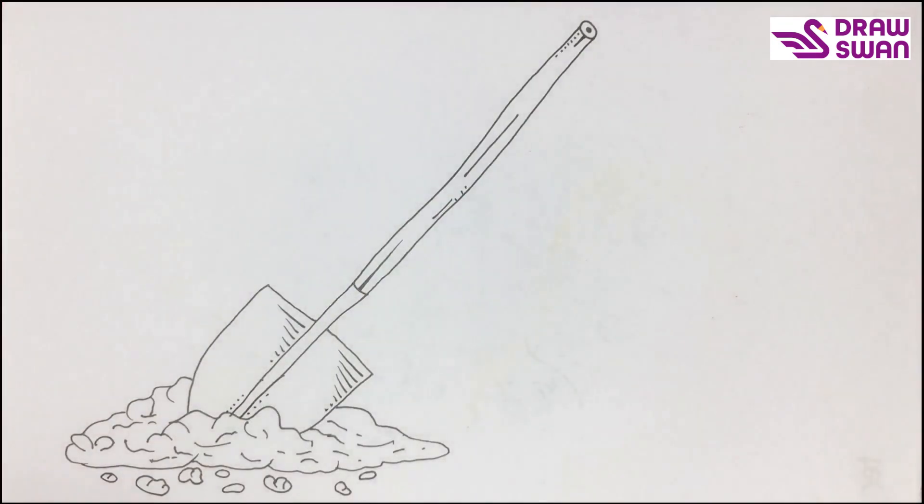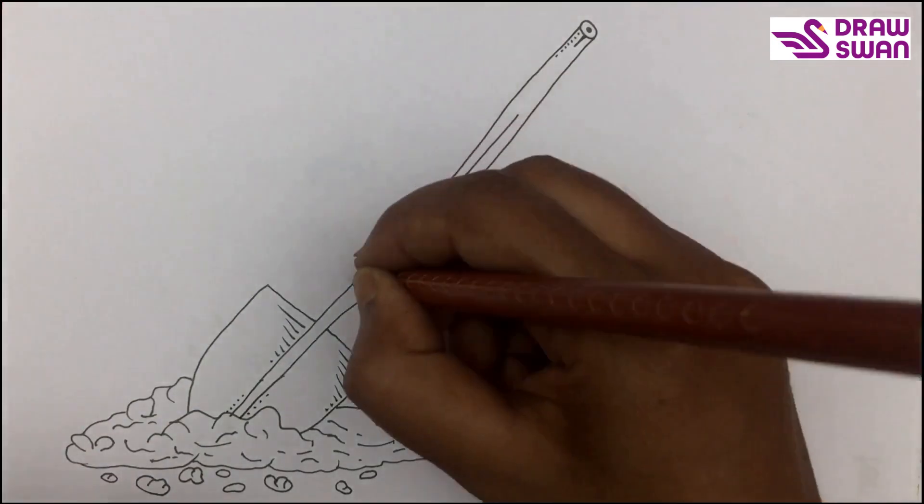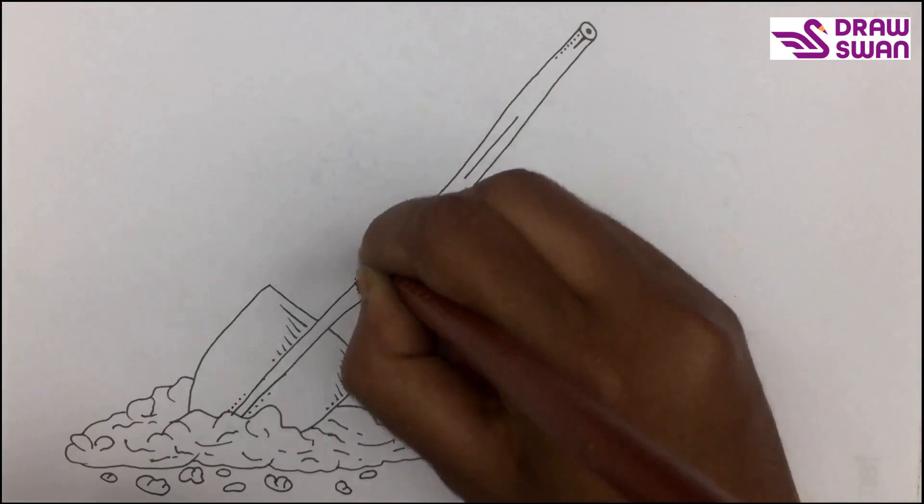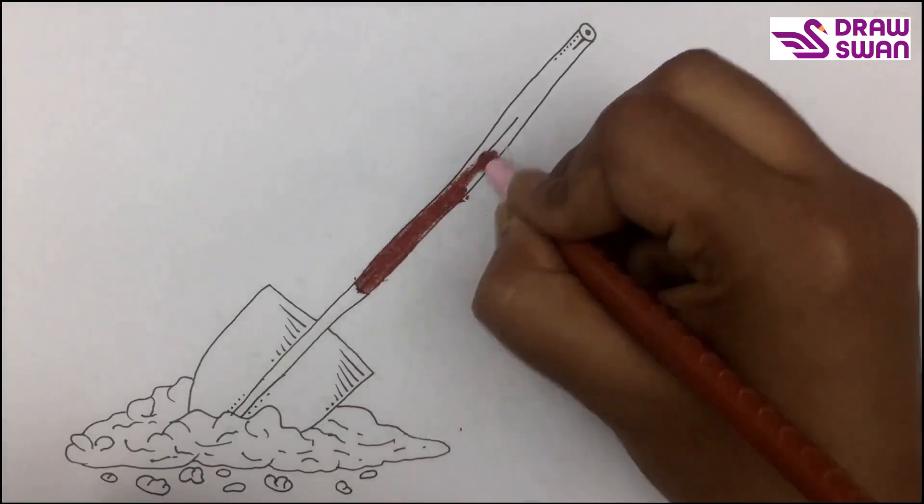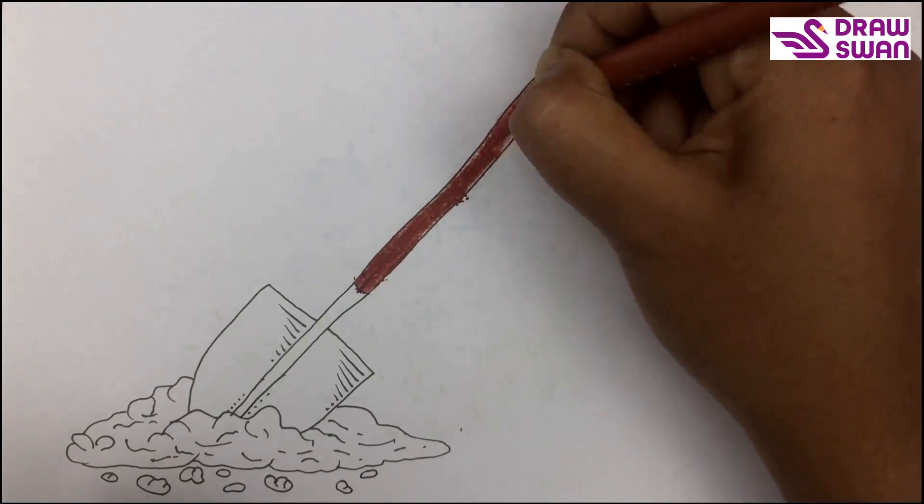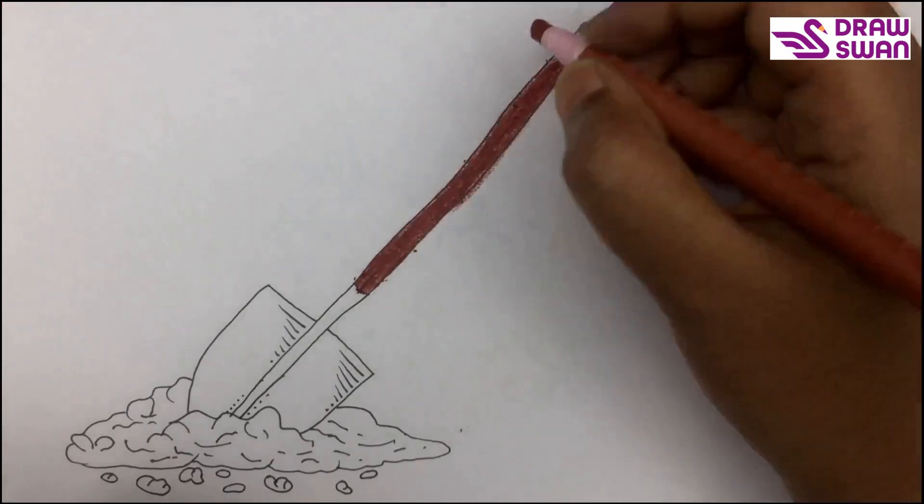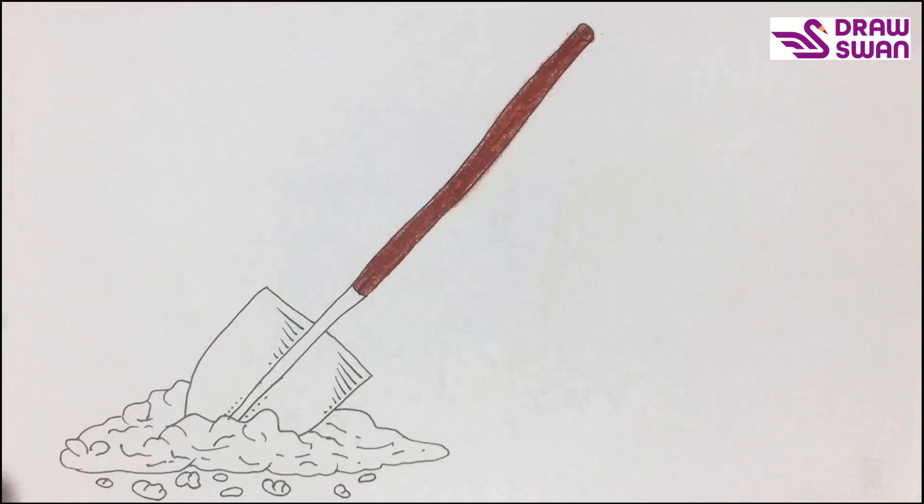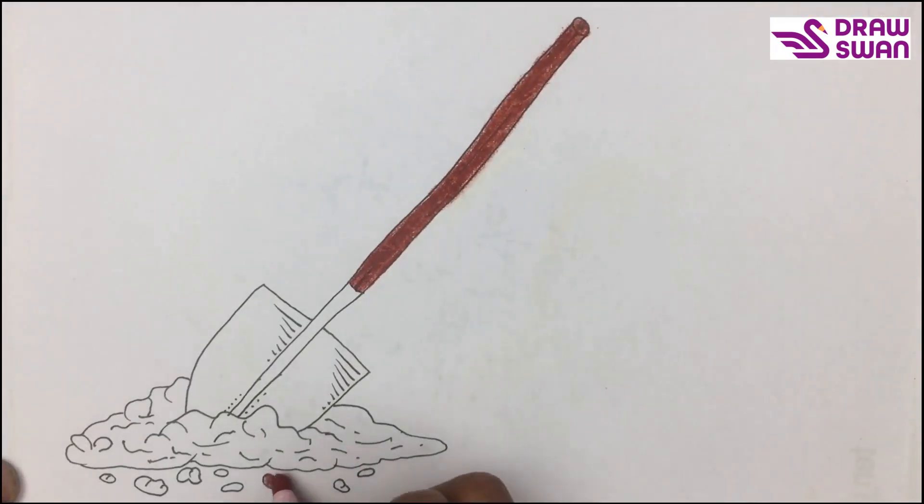And my drawing is done. Let's do the coloring. I'm using brown. I'm using brown for the soil as well.